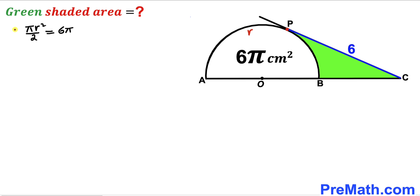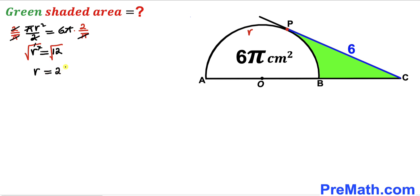Multiplying both sides by 2/π to isolate r², the π and 2 cancel, giving r² = 12. Taking the square root of both sides, the radius r turns out to be 2√3 units.